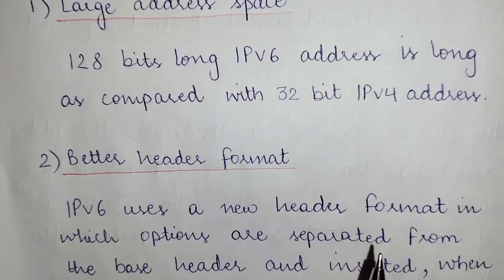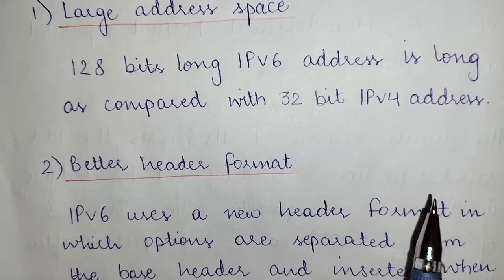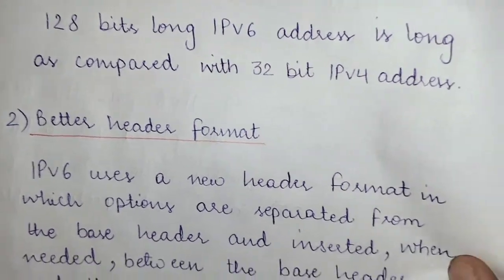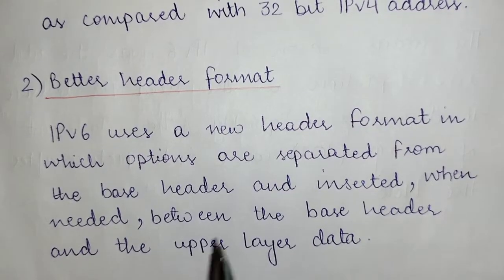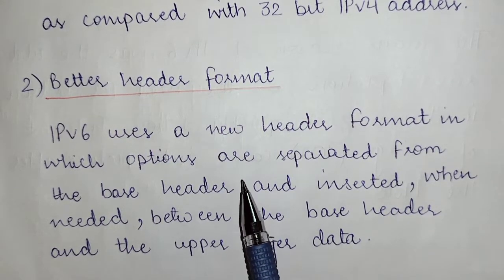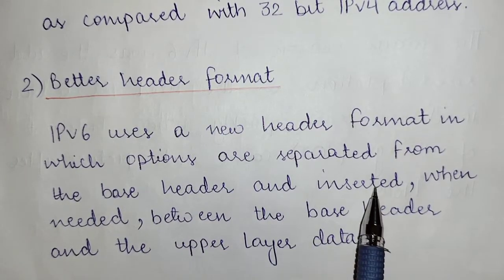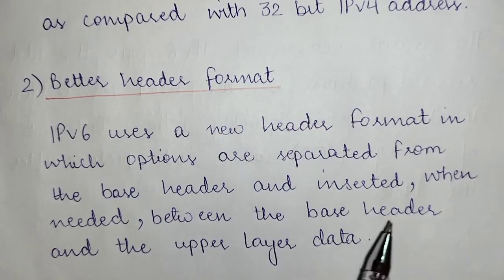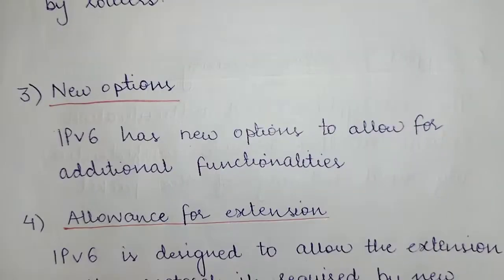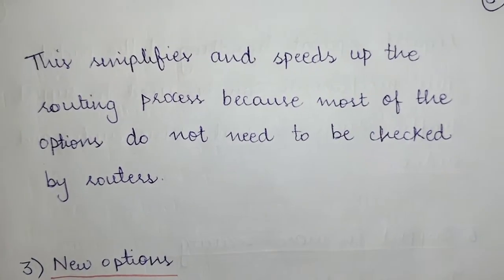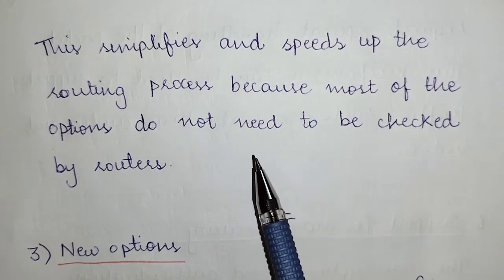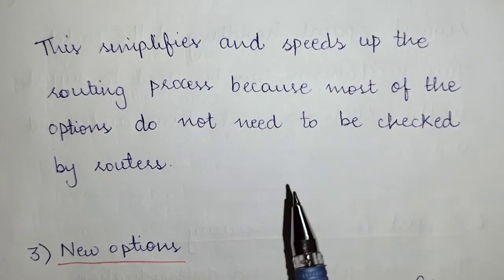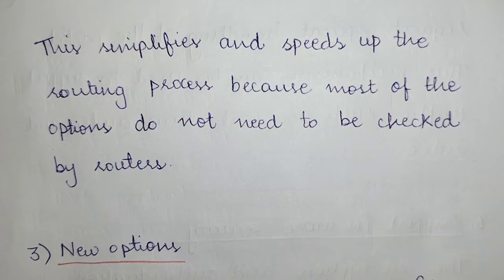IPv6 also has a better header format. It uses a new header format in which options are separate from the base header and inserted only when needed, between the base header and the upper layer data. This simplifies and speeds up the routing process because most options do not need to be checked by routers, saving a lot of time.